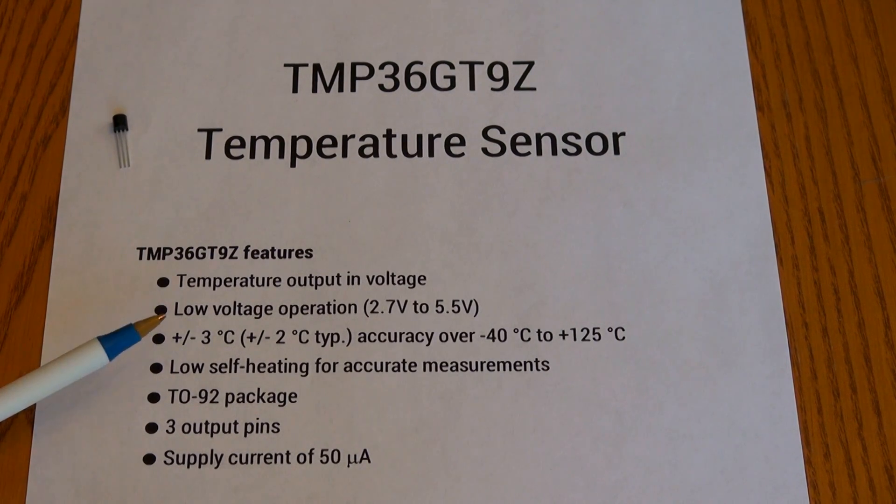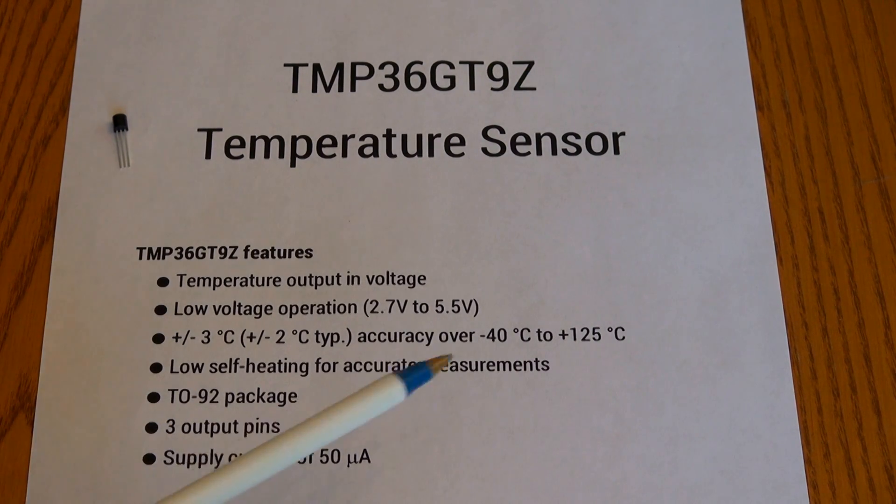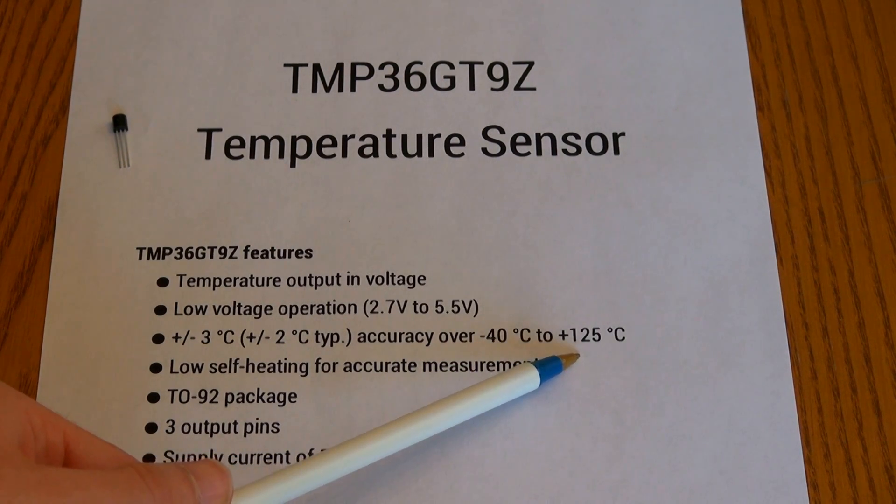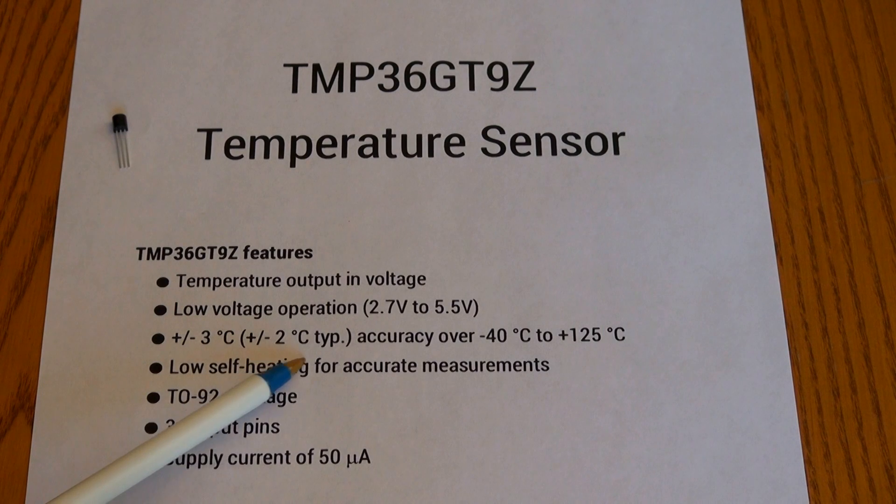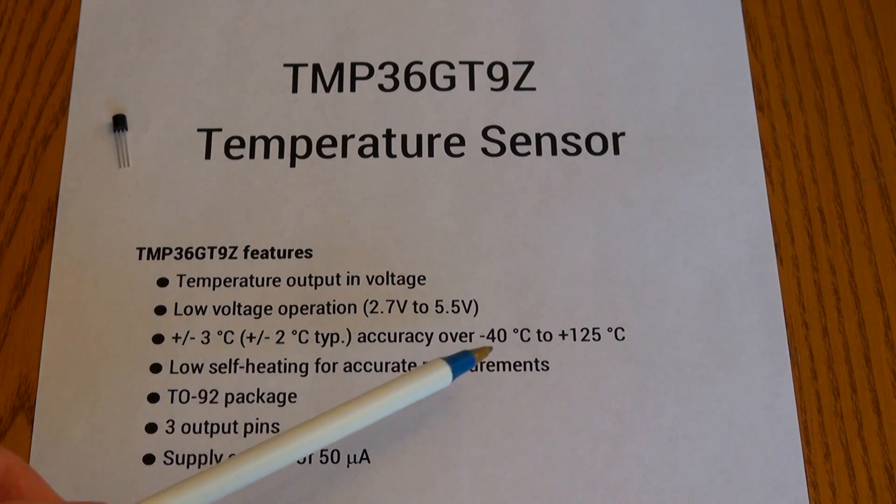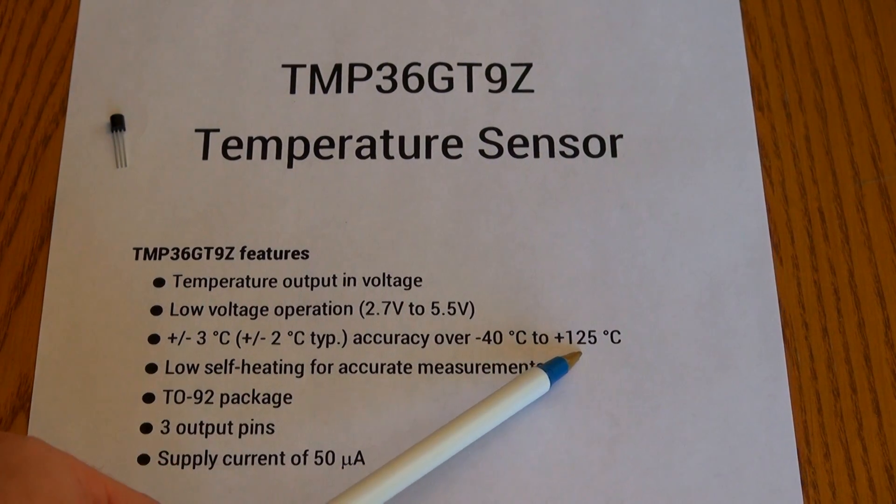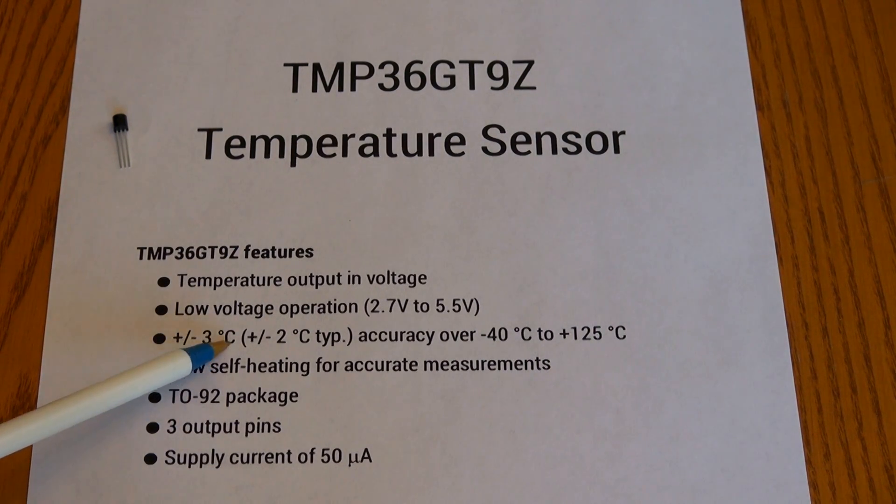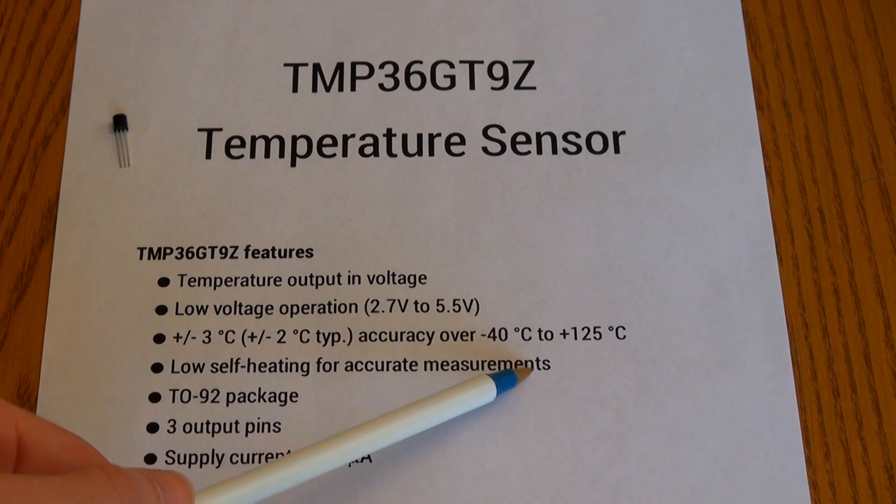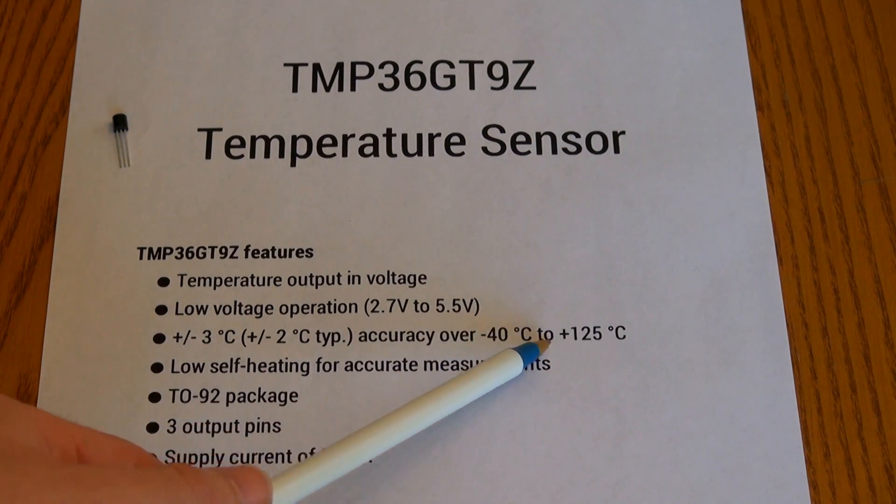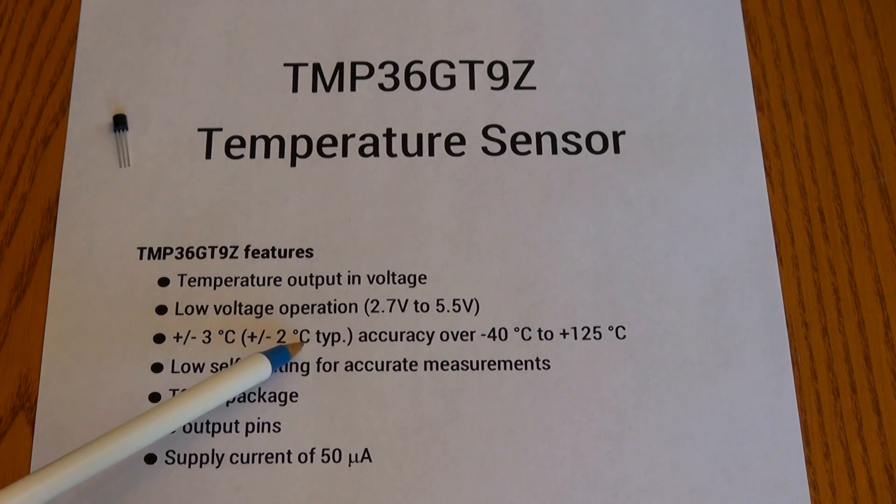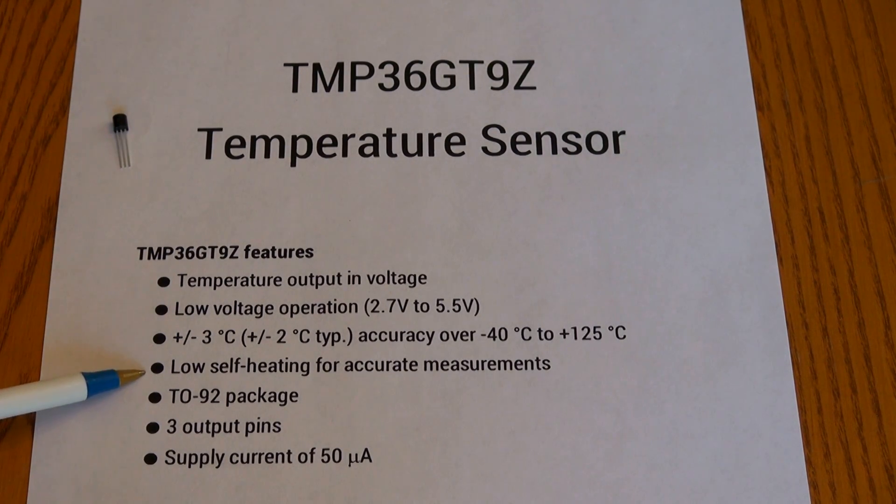On to the temperature accuracy. Analog Devices claims it has a plus or minus 3 degrees Celsius accuracy over the range of negative 40 degrees Celsius up to positive 125 degrees Celsius. They also mentioned that typically you should expect to get around plus or minus 2 degrees Celsius. And the only time you're going to be at plus or minus 3 degrees Celsius accuracy is if you're at the extremes of this temperature range. But if you're more towards the middle of this range, around 40 degrees Celsius, you should expect more around plus or minus 2 degrees accuracy, which is pretty accurate for a temperature sensor which is as cheap and small as this.